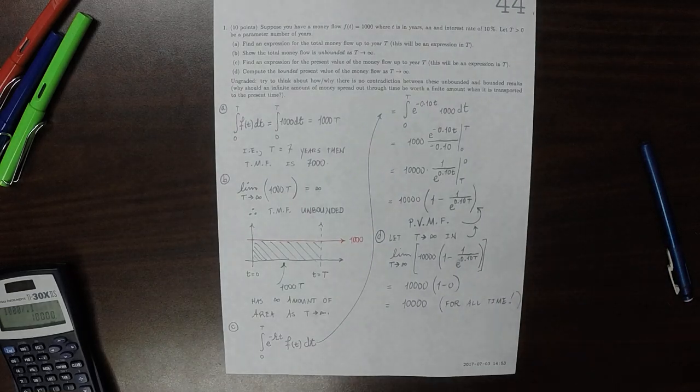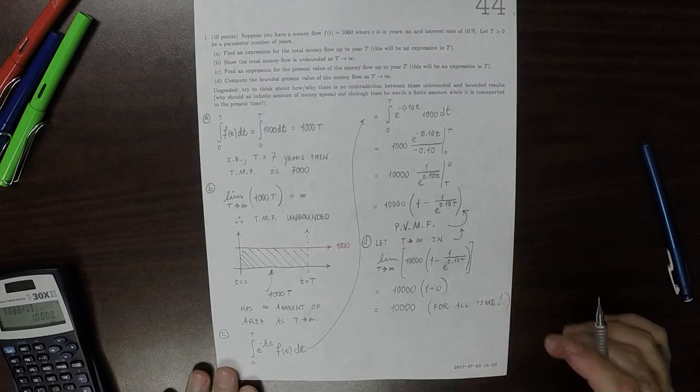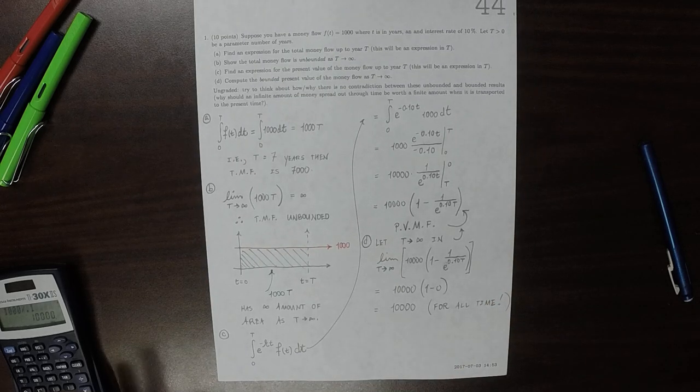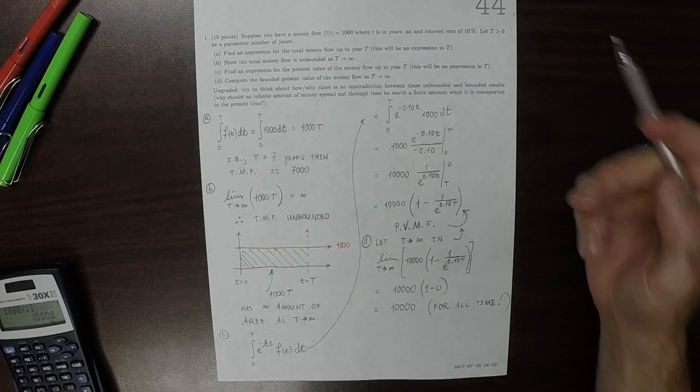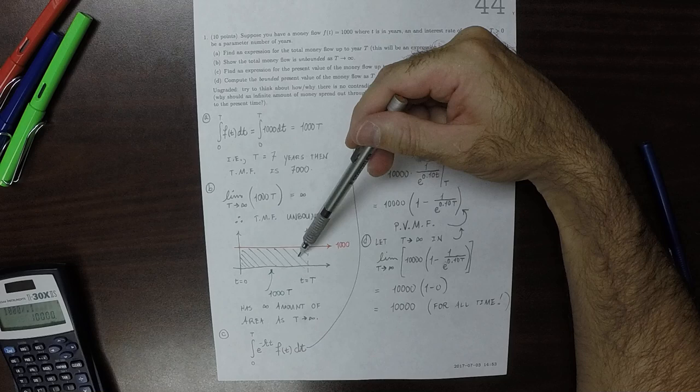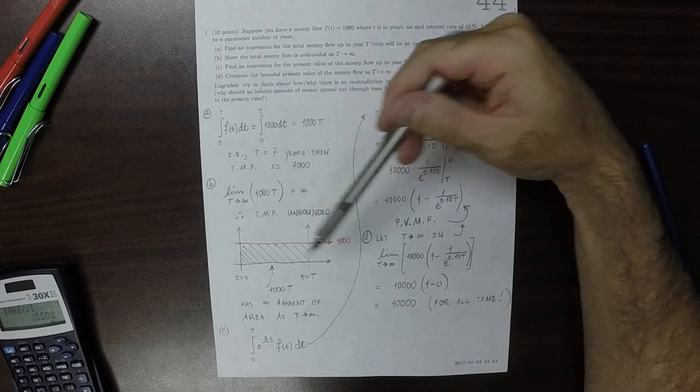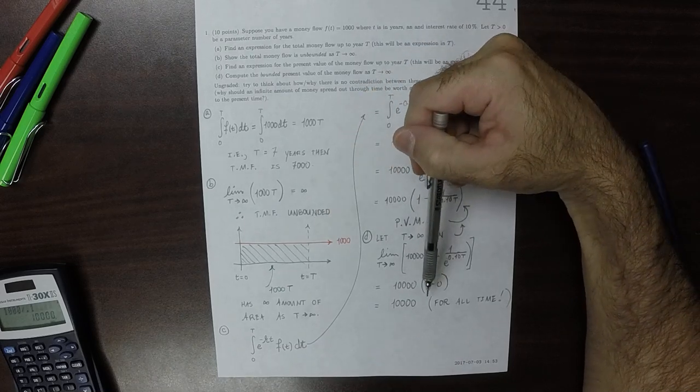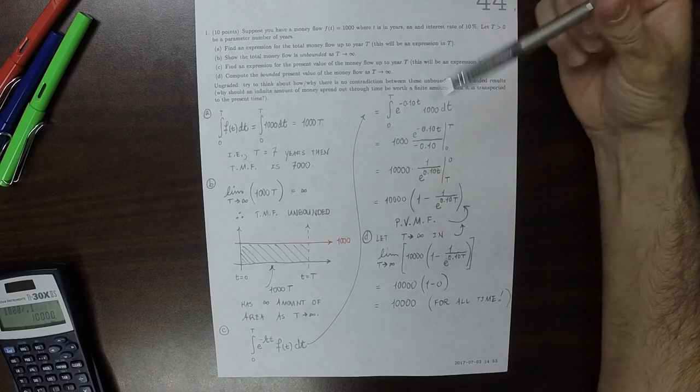So, the ungraded part is to try and consider why are these equivalent? How could it be that this has an infinite amount of money, but the present value of this infinite amount of money is just $10,000?